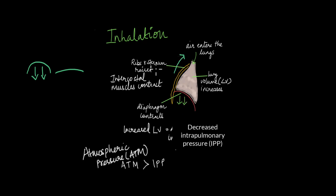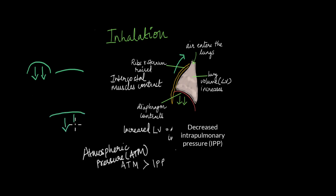The ribs and sternum rise because of the contraction of the intercostal muscles, which connect the ribs. As these muscles contract, the ribs and sternum are raised up. With the diaphragm pulling down and the ribs and sternum being pulled up, the lung volume increases.